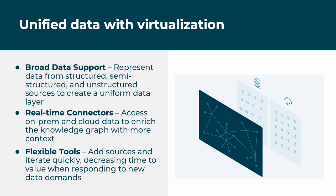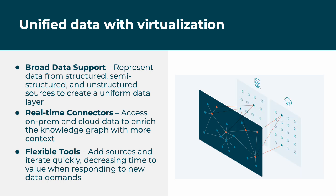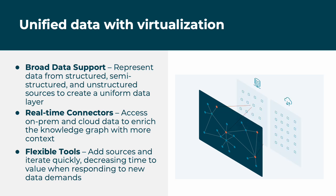One key capability of Knowledge Graphs is data unification. Stardog offers virtualization connections to a variety of systems, whether on-prem or in the cloud. These connectors are used to connect data from structured, semi-structured, and unstructured sources together to create a uniform data access layer. Stardog offers tools to add sources and iterate quickly on data mappings, thus enabling our users to respond agilely to new data demands.